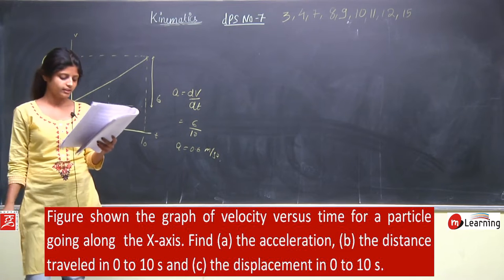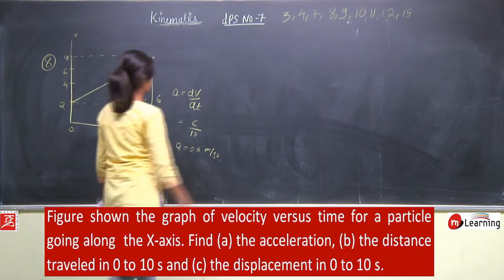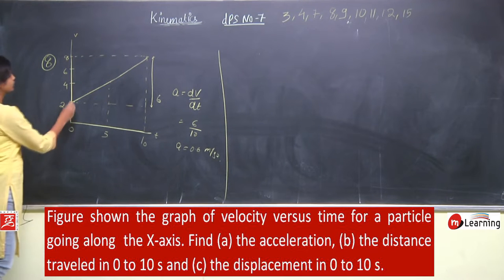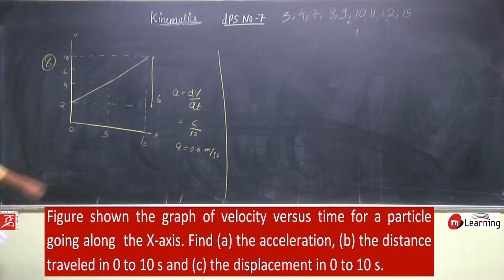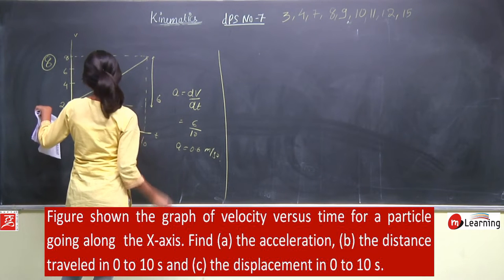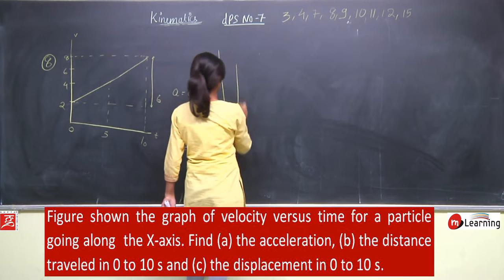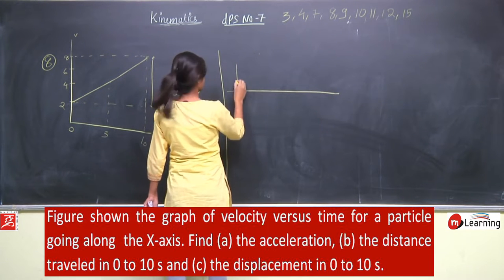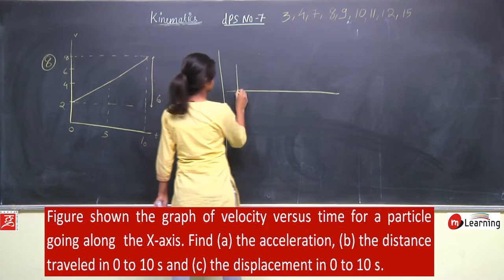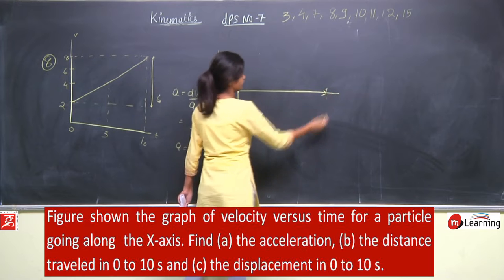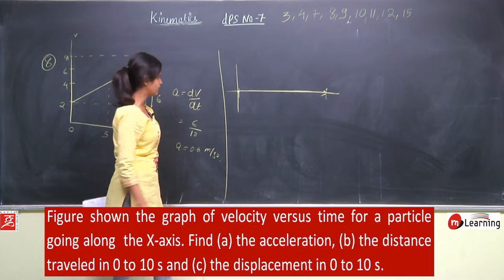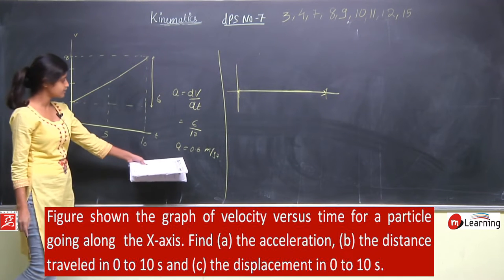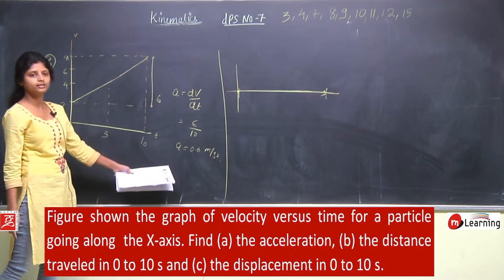Then find the distance travelled and displacement from 0 to 10 seconds. Acceleration 0.6 meter per second square है, और 2 meter per second की initial velocity से x-axis में move कर रहा है। Suppose उसने x equal to 0 से start किया। Acceleration positive है, मतलब आगे की तरफ ही move करता जा रहा है — direction कहीं change नहीं हुआ। इसका मतलब जो distance होगा, वही displacement होगा।